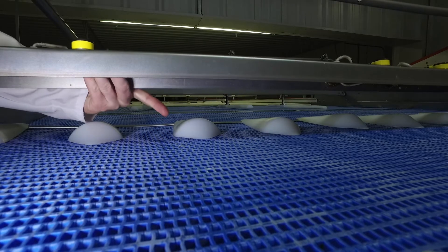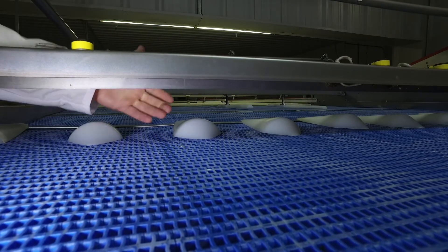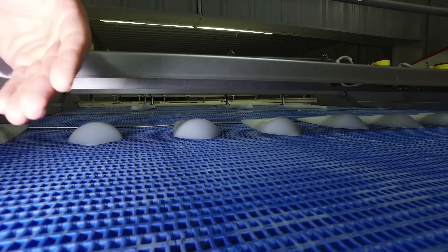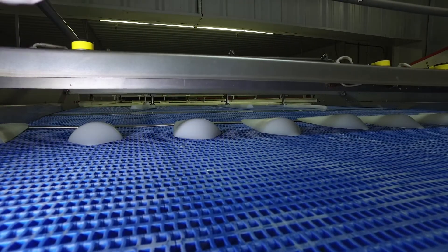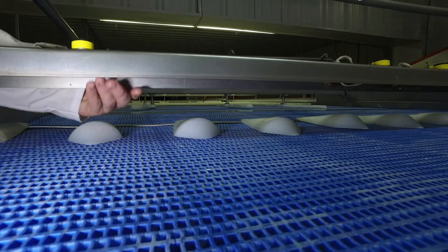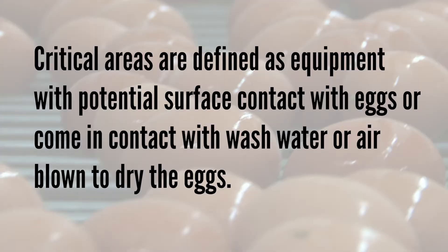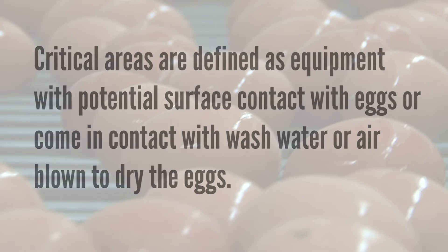However, microbial growth will not always be seen, smelled, or felt. Critical areas are defined as equipment with potential surface contact with eggs, or that come in contact with wash water or air blown to dry the eggs.